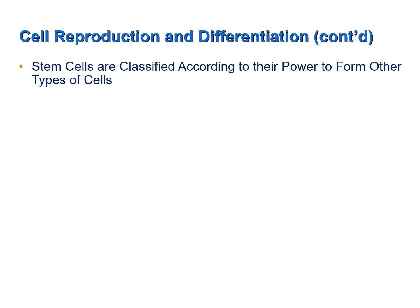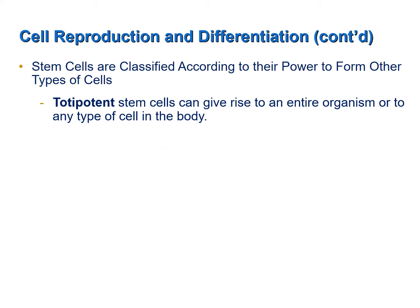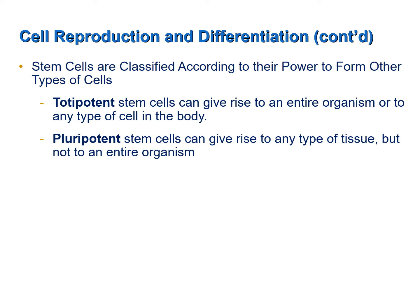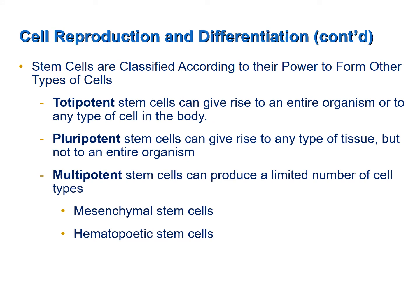Stem cells are classified according to their ability to form other types of cells. Totipotent stem cells can give rise to an entire organism or to any type of cell in the body — that fertilized ovum is a totipotent stem cell. Pluripotent stem cells can give rise to any type of tissue, but not to an entire organism. Multipotent cells are stem cells that can produce only a limited number of cell types, such as mesenchymal cells and hematopoietic stem cells.